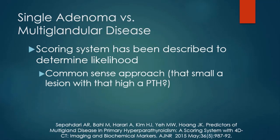That's important for us as imagers. The question of whether we find one diseased gland or multi-glandular disease is an important consideration. There is actually a scoring system that has been described to determine the likelihood of multi-glandular disease. I view the whole thing as a common sense approach: if you have a patient with markedly elevated parathormone and very high calcium and you've found a single lesion, is that likely to be the etiology, or are there more glands involved?